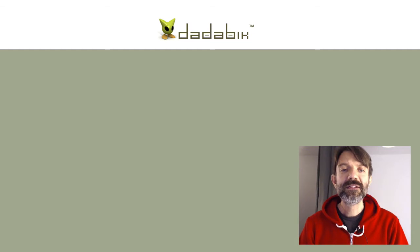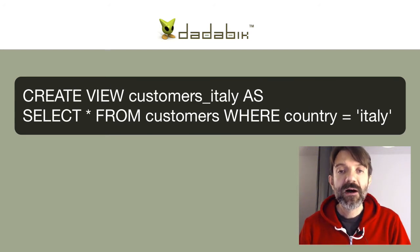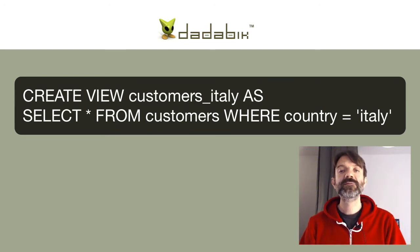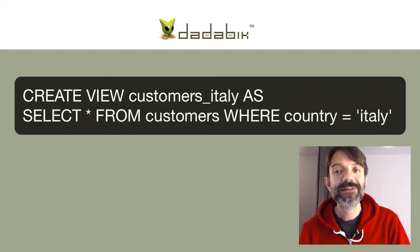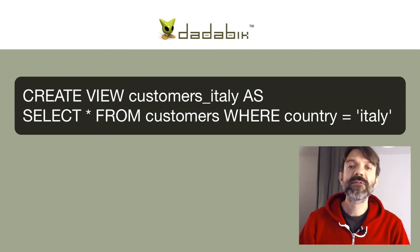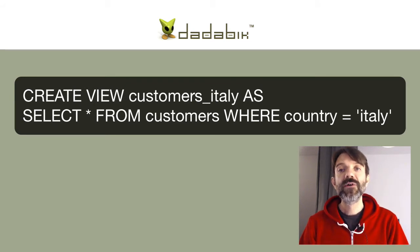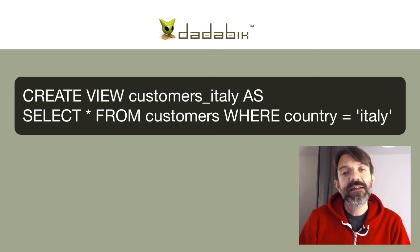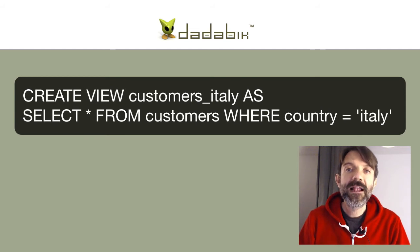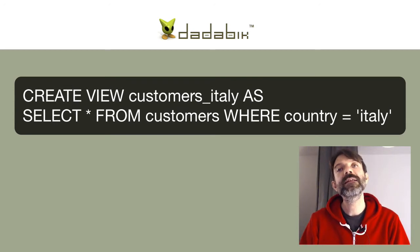So why is this not a real table? Because our DBMS — database management system — doesn't store the customer records for this view. It only stores the query used to define the view: SELECT * FROM customers WHERE country = 'Italy'. So every time I access 'customers_italy', behind the scenes the DBMS executes that query and returns the results.